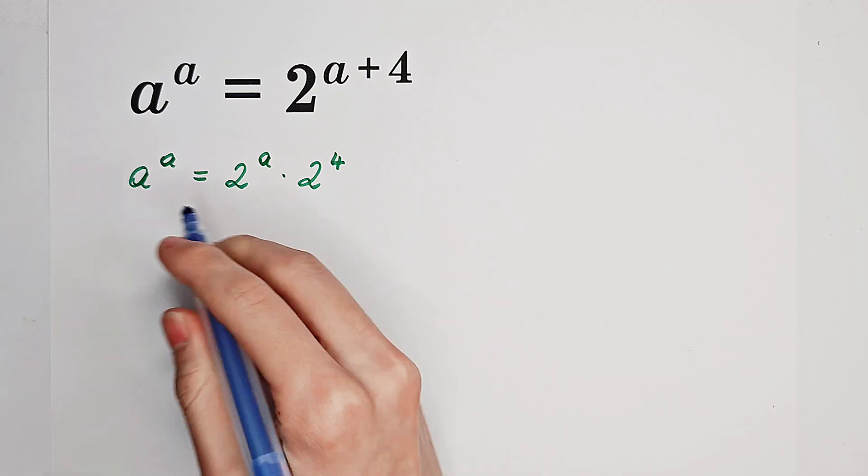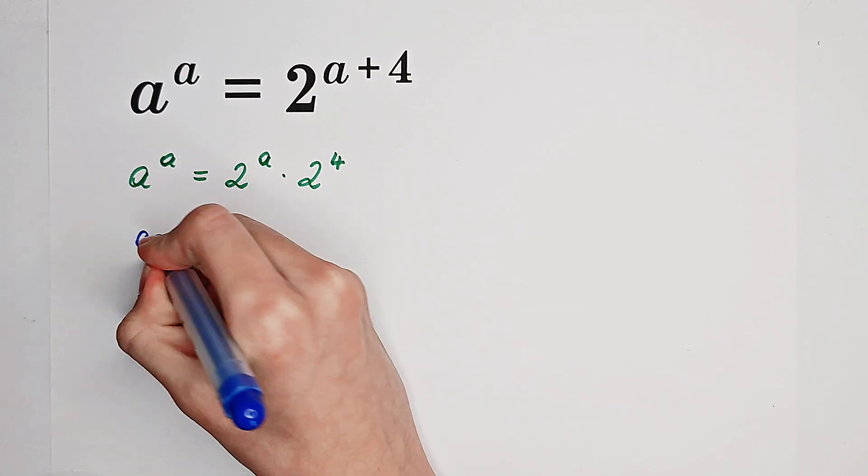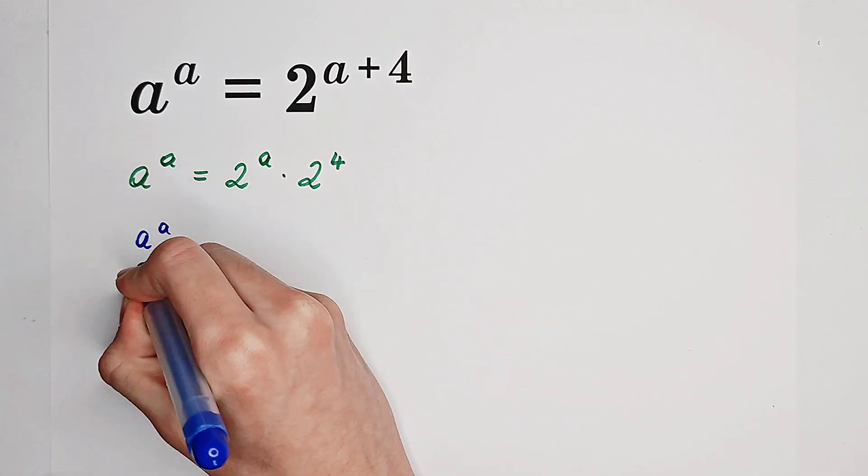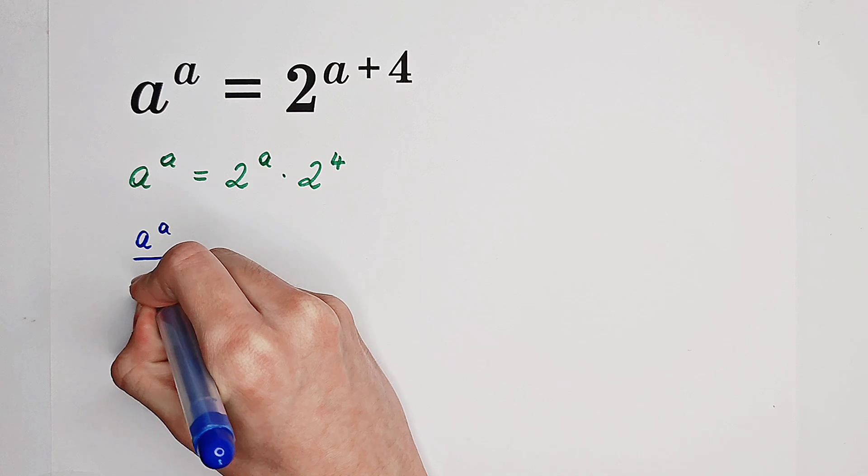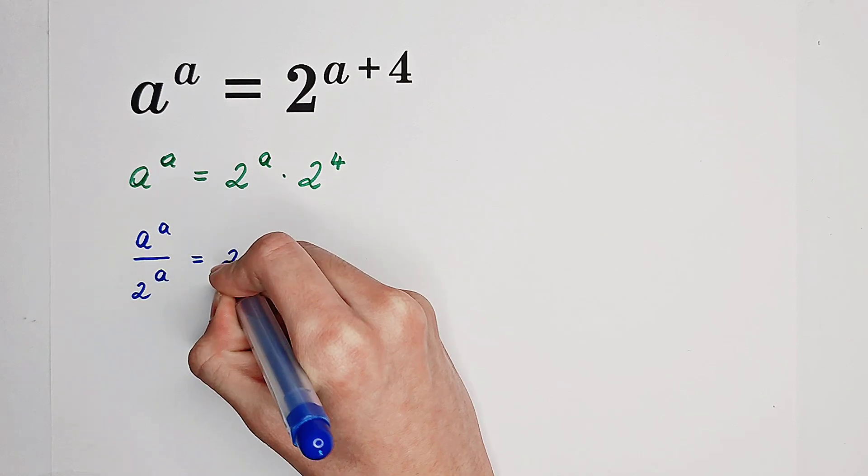Now, we divide both sides by 2 to the power of A. A to the power of A over 2 to the power of A equals 2 to the power of 4.